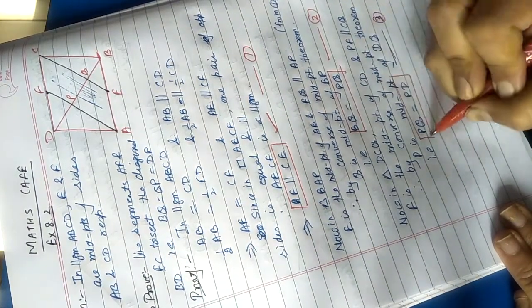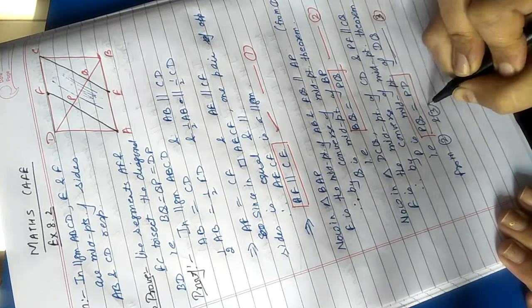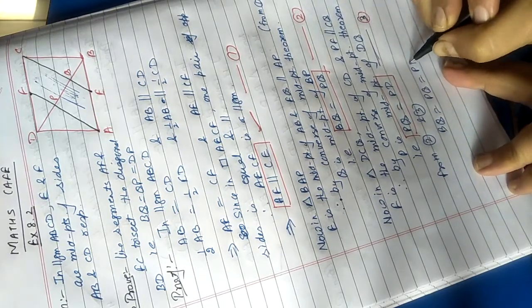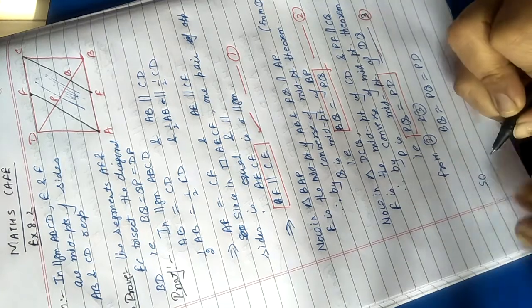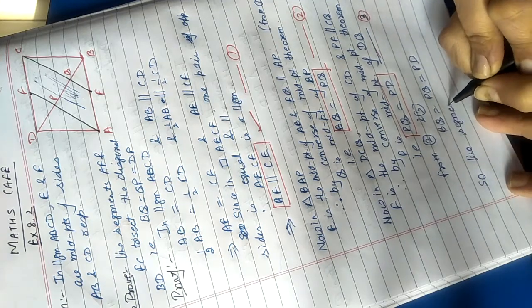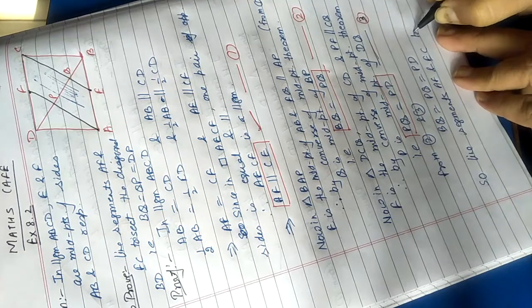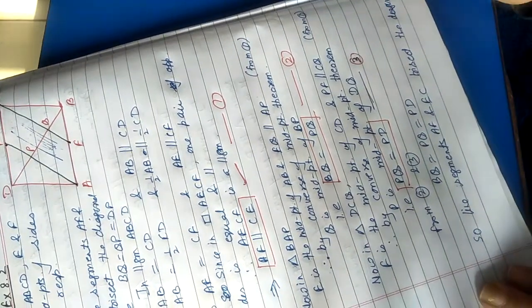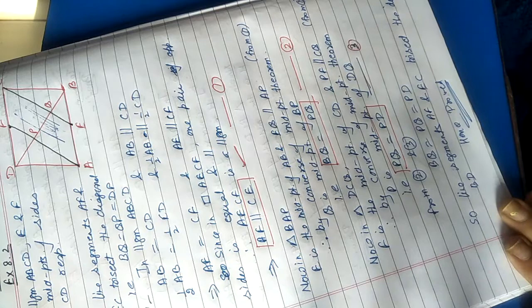From the second and third results: BQ is equal to PQ and PQ is equal to DP. This is exactly what we had to prove. Therefore line segments AF and EC trisect the diagonal BD. Hence proved. This question is complete.